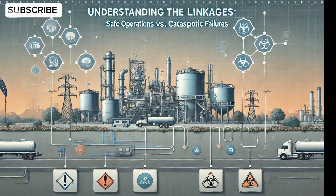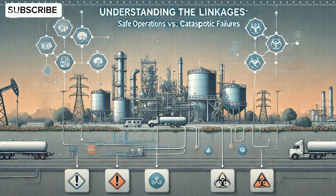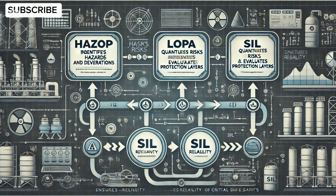If you're designing or operating oil and gas facilities, understanding these linkages can mean the difference between safe operations and catastrophic failures. Here's how these processes work together: HAZOP identifies hazards and deviations, LOPA quantifies the associated risks and evaluates the effectiveness of protection layers.